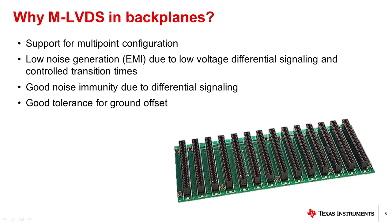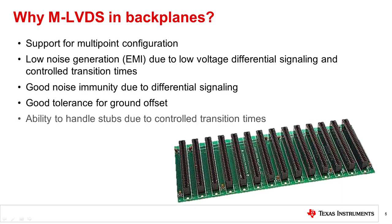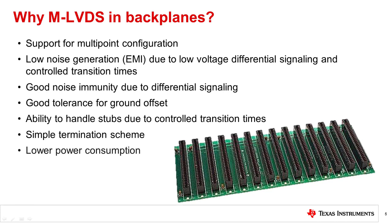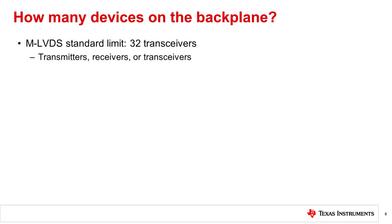MLVDS offers good tolerance for ground shifts due to its wide input common mode range. The plug-in boards on the backplane create stubs, which are basically unterminated transmission lines. The controlled transition times of MLVDS help reduce the effect of these stubs. The MLVDS termination scheme is simple, as we will see later in this video. Additionally, power consumption of MLVDS is low due to the low voltage swing.